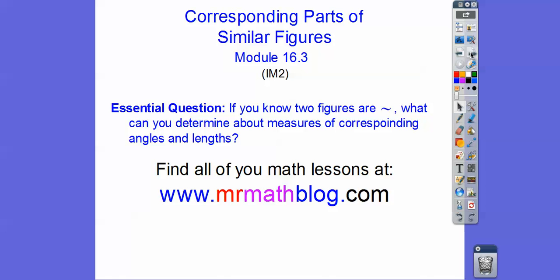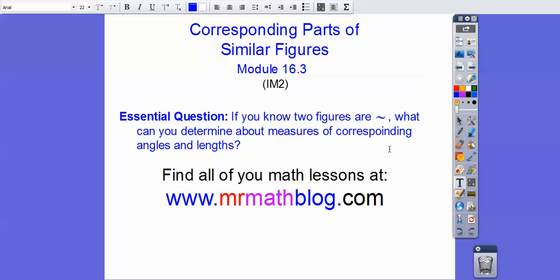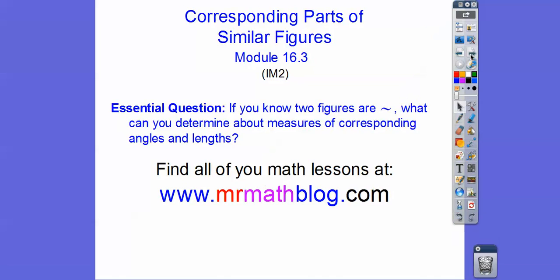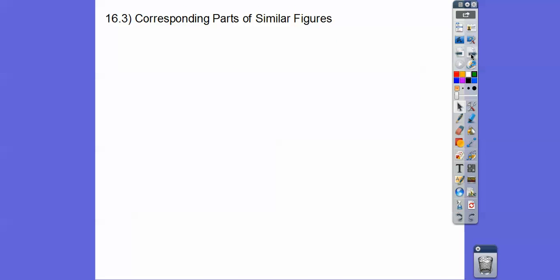Our question here is, if we know that two figures are similar, what can we determine about the measure of their corresponding angles and lengths? I got an extra I in there. Let me take that out. Let's go ahead and get started here. So Corresponding Parts of Similar Figures. Properties of Similar Figures.